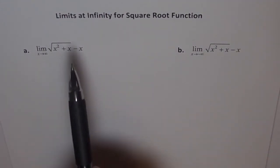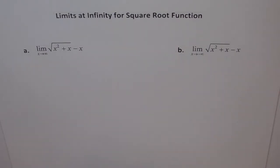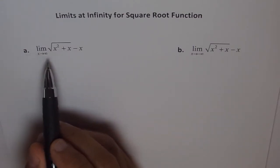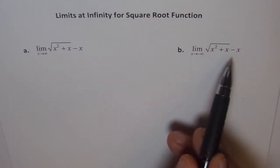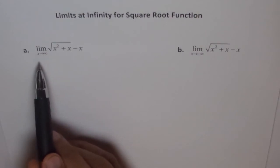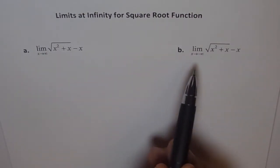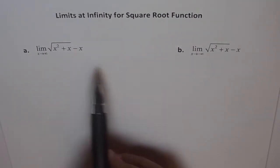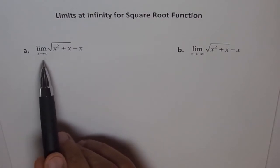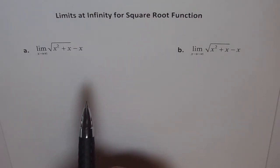Let's try to do some limits at infinity for square root functions. These are the most complicated questions which you come to when taking limits. Square root functions are very tricky. Both problems are similar in the sense that the functions are the same but the limits are at different points. In the first case we are saying when x approaches infinity, and in the second case we are checking for x approaching minus infinity. We'll start with the first one where x approaches positive infinity and see what happens to the function.